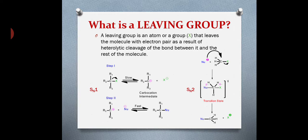In both reactions, the leaving group goes out with the electron pair, indicated by green color. Breaking of the bond with the leaving group happens in the rate-determining step of the reaction, and therefore the change in the nature of the leaving group will affect the rate of both SN1 and SN2 reactions.